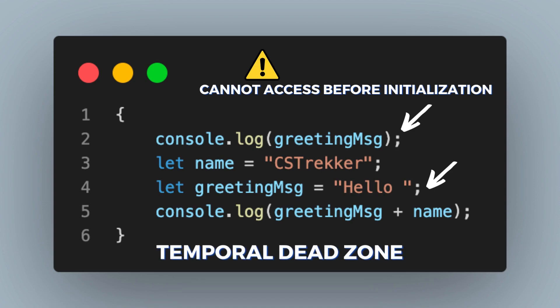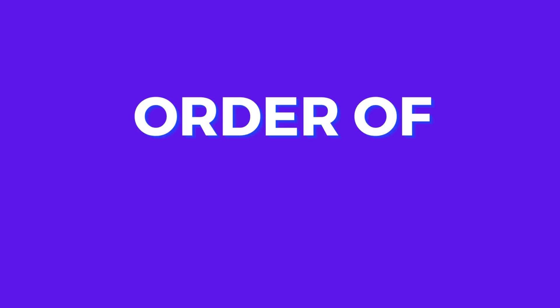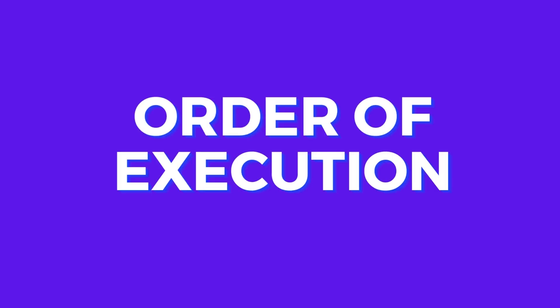To summarize, the temporal dead zone starts at the beginning of the scope — in this case, the first line after the curly braces — and ends at the line where the variable is finally declared, the third line in our case. It is also important to note that the temporal dead zone depends on the order of execution rather than the order of position in your source code.